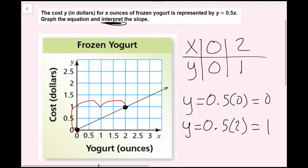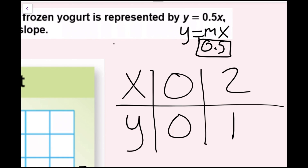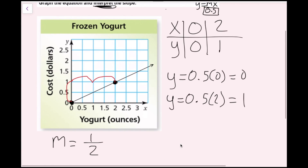You also could have looked at the equation. This equation is y equals something times x. If you remember, y equals mx tells us we have a proportional relationship, and this m value is the constant of proportionality, also known as the slope. So I can just look and see the slope is 0.5, because that is the value being multiplied by x. And I know 0.5 and one-half are the same thing, so my slope is one-half.